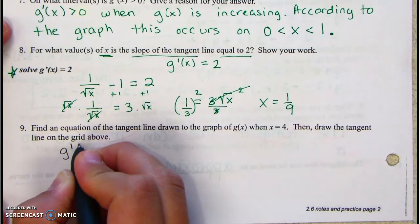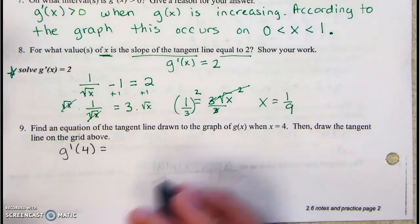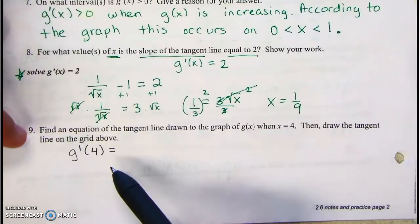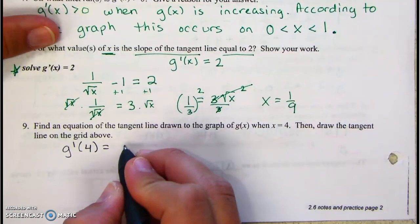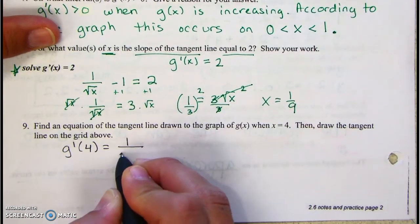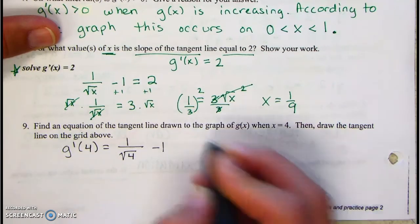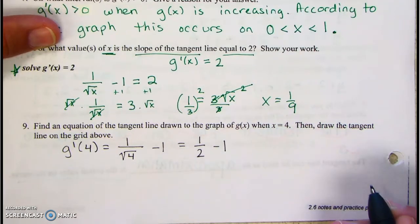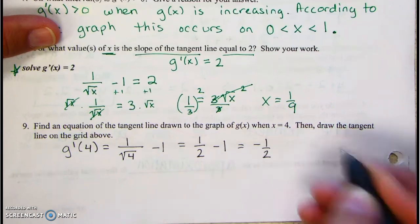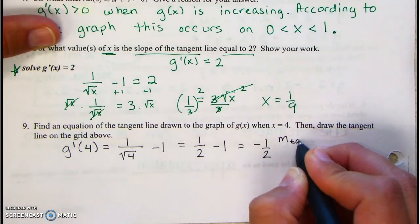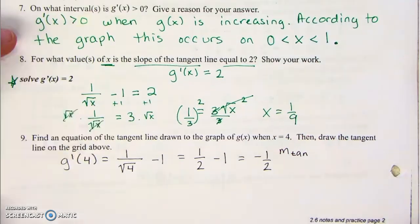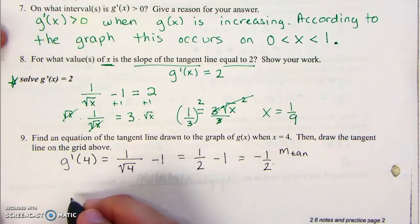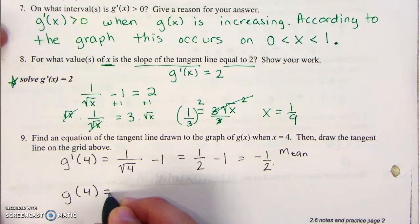First we have to find g prime of 4. Notice each question asks something different — on number 8 we solved for x, but on number 9 we're plugging in x equals 4. So we need to be careful. The square root of 4 is 2, so we compute 1 half minus 1 which equals negative 1 half. That's the slope of the tangent line.